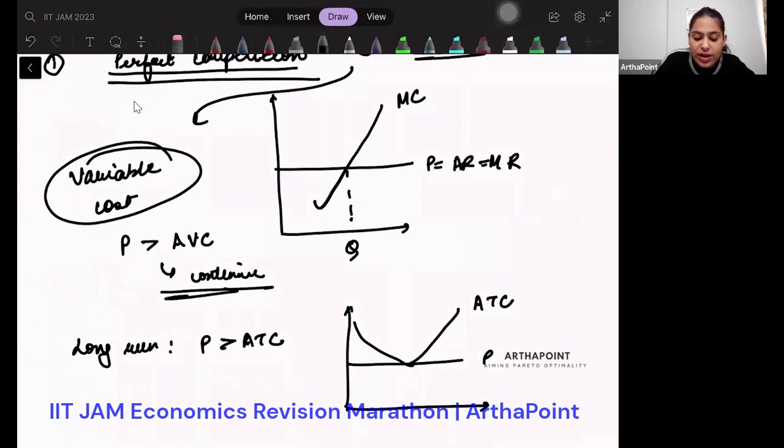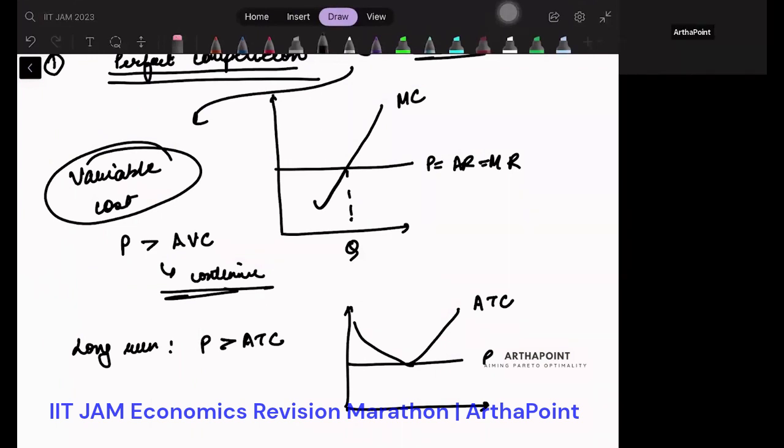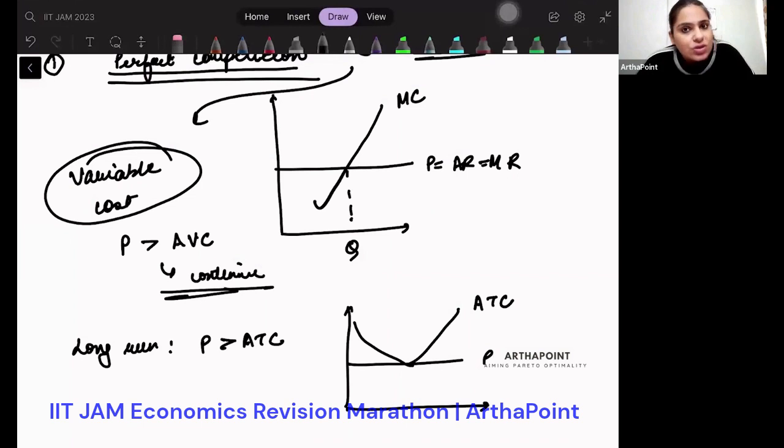So each and every property, why is marginal cost curve called the supply curve of the firm? That property. And then other essential things also. You need to go ahead and you need to do each and every property.